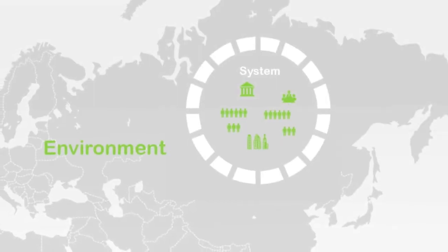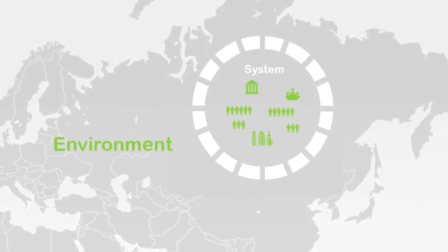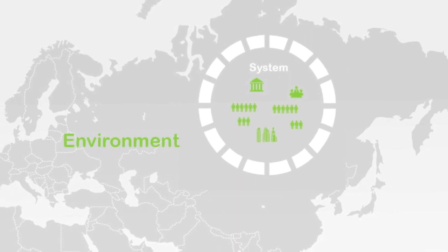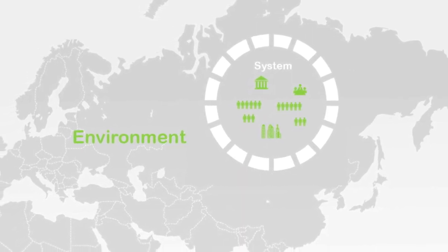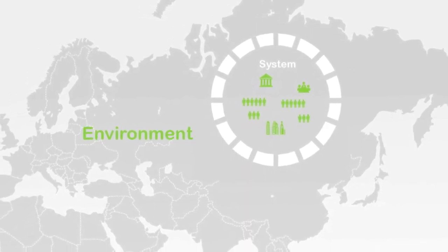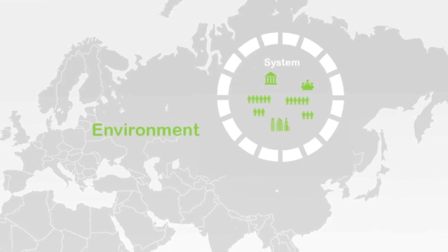An example of this might be a country, interior to which are all the people, institutions and other elements that constitute the nation as an entire system, whilst exterior to its boundary is the international political environment.